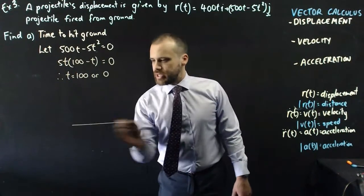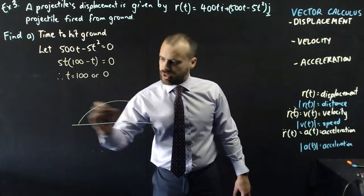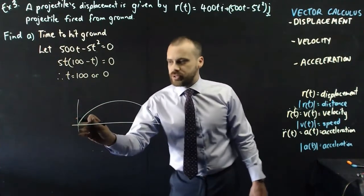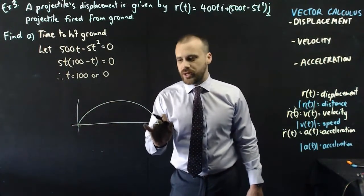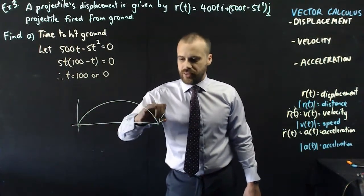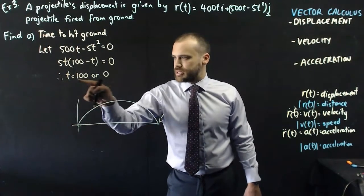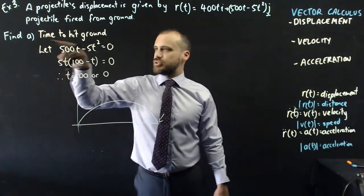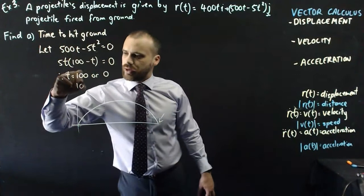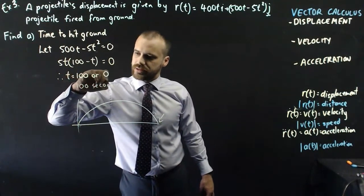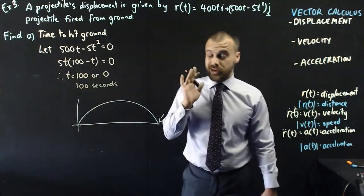So, that's all we need to do to find the time to hit the ground. So, here I am letting the j component equal zero, and if I solve that, I get t equals 100, or t equals zero. And that makes a lot of sense because it's a projectile, and at time zero, it's touching the ground, but also at time 100, it's touching the ground, and that is my second answer. So, my answer to time to hit the ground is 100 seconds. All right, this projectile is in the air for a long time.